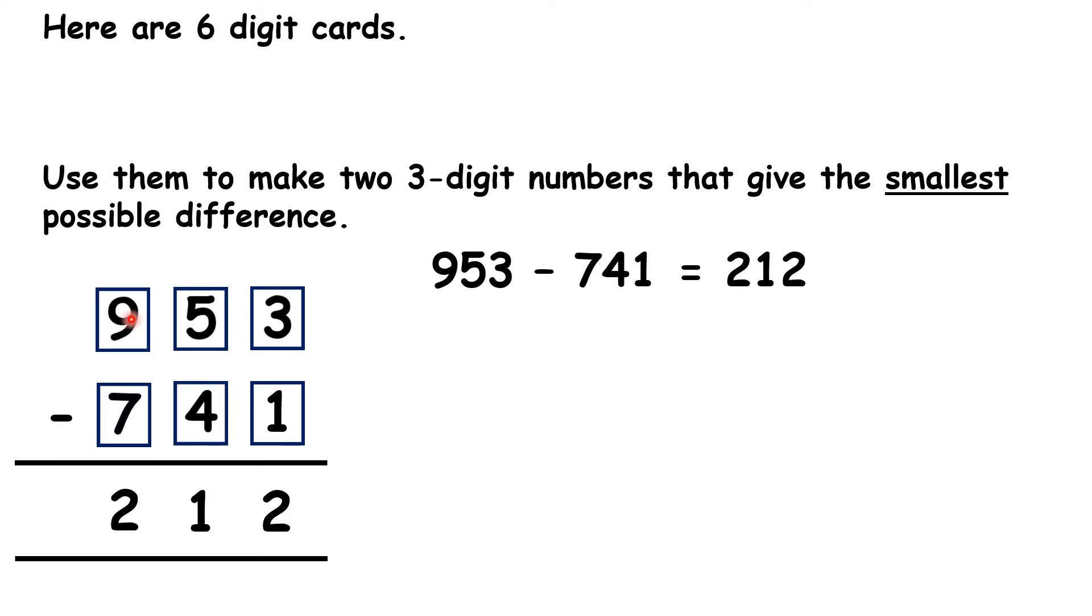So how might we change the order of these cards to make a smaller difference than 212? Well, the main problem we have here is that when we find the difference, we have a 2 in our hundreds column. How could we rearrange these cards so that we have a 1 or a 0 in our hundreds column? Well, we need the 2 digits with the smallest difference in our hundreds. Here, the difference between 9 and 7 is 2. But the difference between 4 and 5 is only 1, and the difference between 3 and 4 is also only 1.